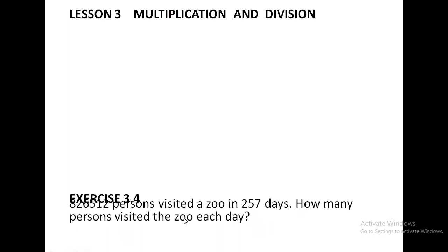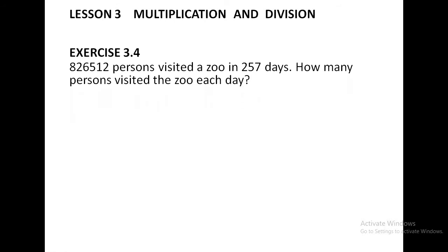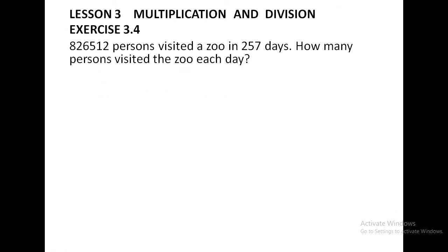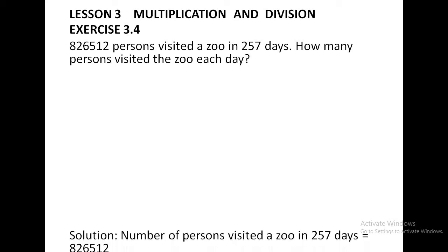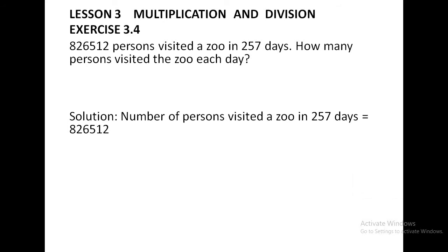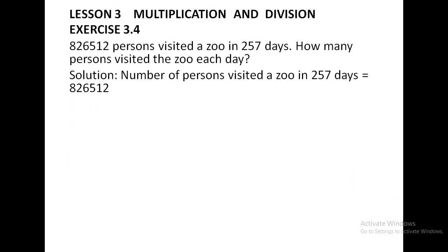The first problem sum: 8,26,512 persons visited a zoo in 257 days. You have to find how many persons visited the zoo each day — that is, how many persons went to the zoo per day. You should know how to write the solution sentence. Number of persons visited a zoo in 257 days is equal to 8,26,512.